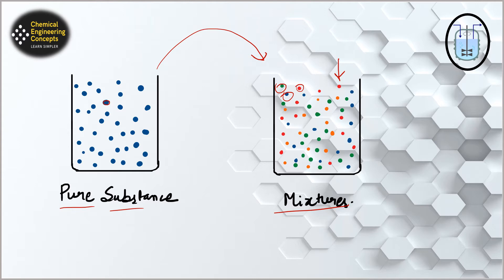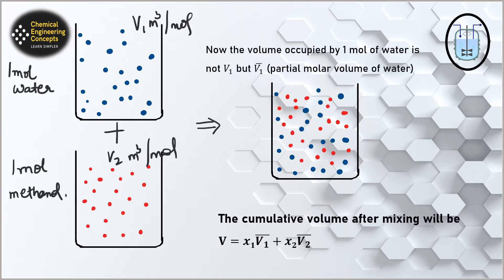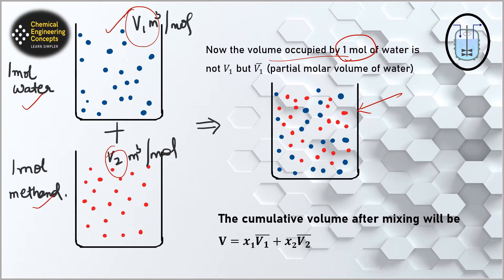Let's take an example to understand partial molar properties. Suppose we have one mole of water and one mole of methanol. The volume of one mole of water is V1 meter cube per mole — the molar volume. The molar volume of one mole of methanol is V2 meter cube per mole. Now when we mix them, the volume occupied by one mole of water is no longer V1, but it becomes V1 bar — that is the partial molar volume of water.